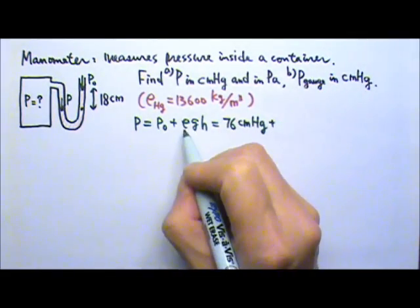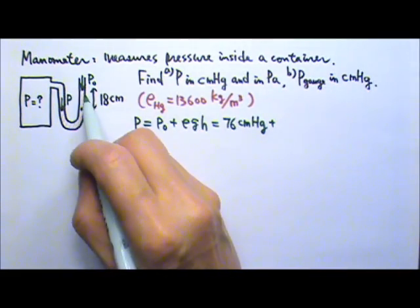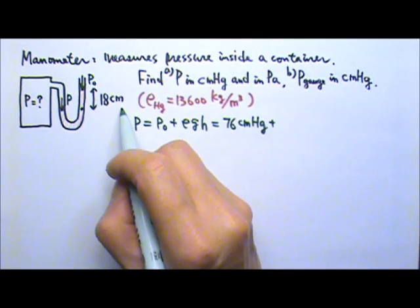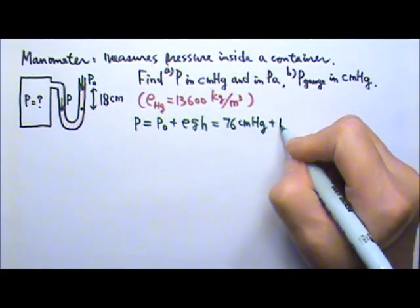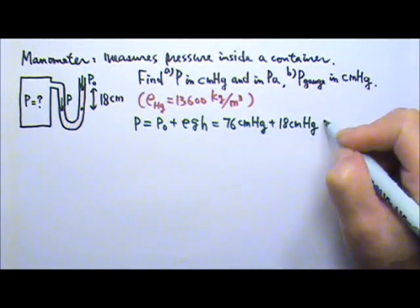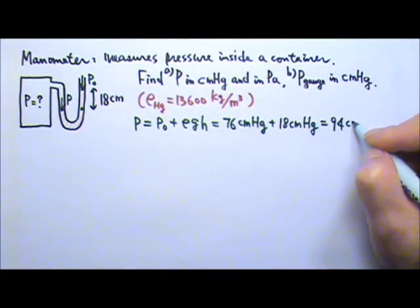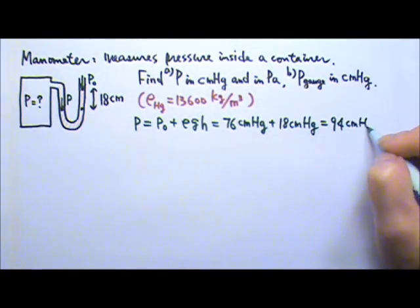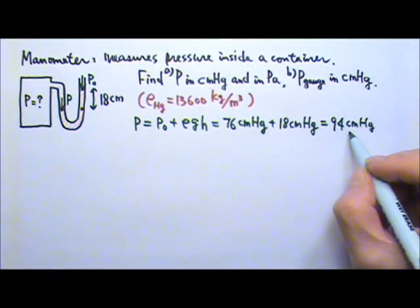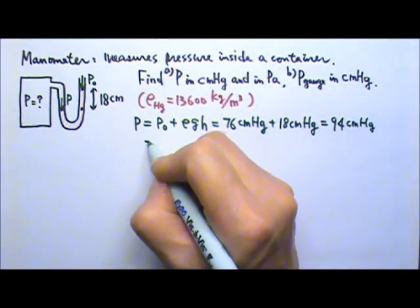The ρgh from the mercury column — since the mercury column is 18 centimeters tall — is just 18 centimeter mercury. So this gives me 94 centimeter mercury.